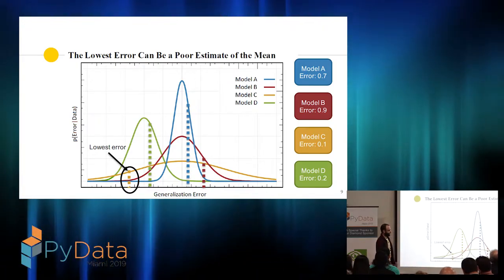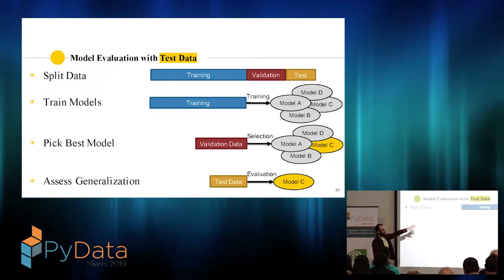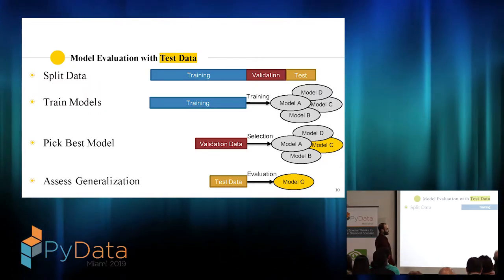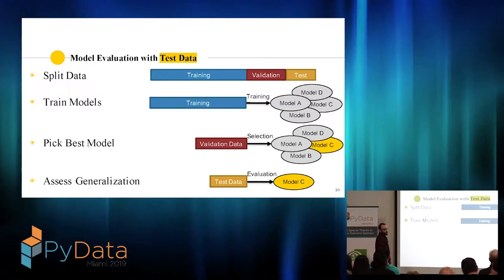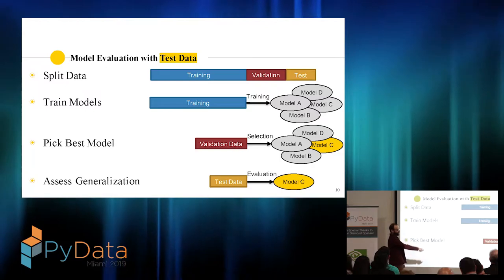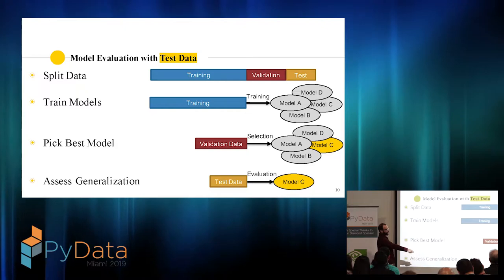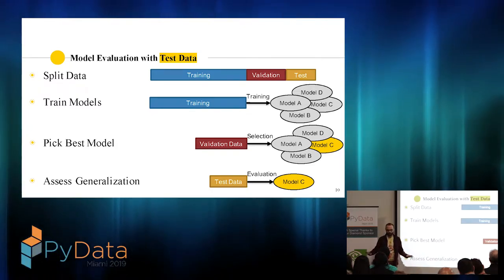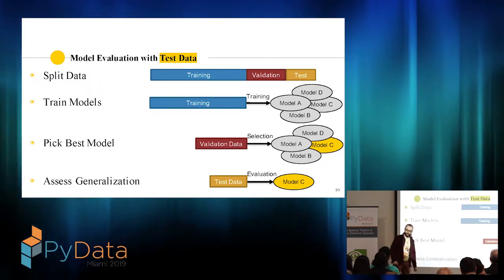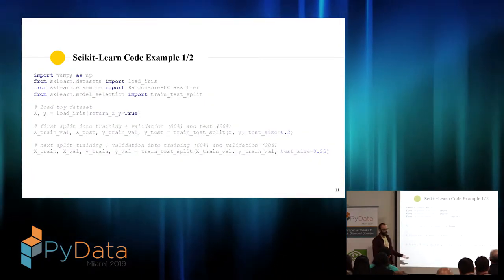The way to hedge your bets properly is to do a test data split as well. This is actually the most traditional way to evaluate your models. You have training, validation, and test sets. You apply all four models on the training set, evaluate them on the validation set, choose the one with the lowest error, and then apply only that model on the test data. This is a completely legitimate way to both choose a model with validation data and assess its generalization performance with test data.